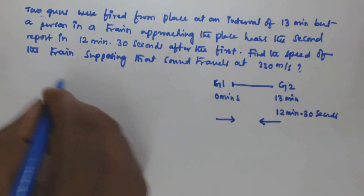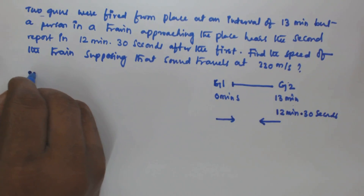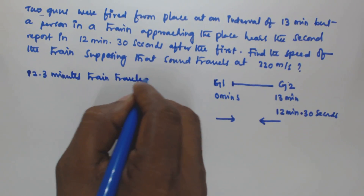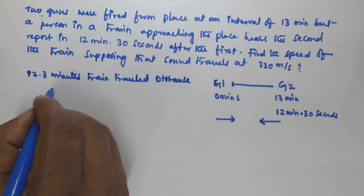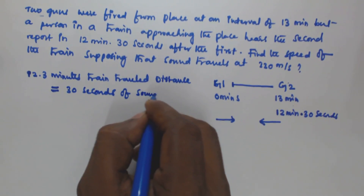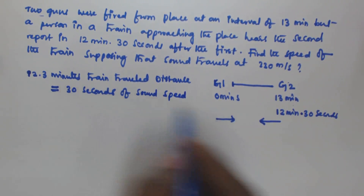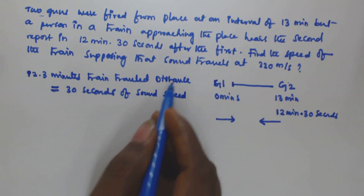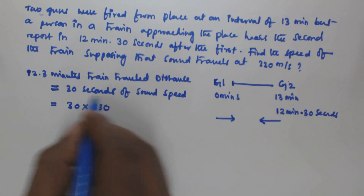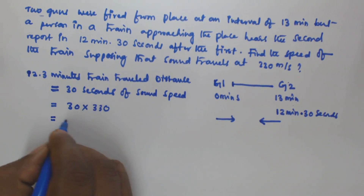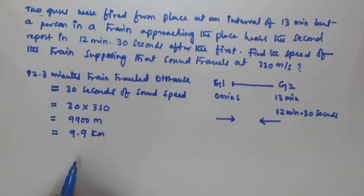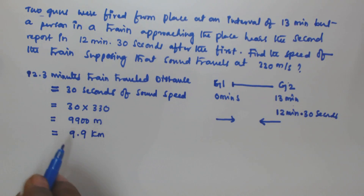From this observation we can say that the distance traveled by the train in 12.5 minutes is going to be equal to the distance covered by sound in 30 seconds. So 30 seconds of sound speed is 30 into 330 meters per second, which gives us 9900 meters. This can be written as 9.9 kilometers. So the train traveled 9.9 kilometers in 12.5 minutes.